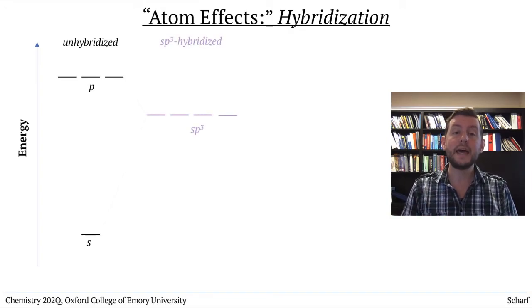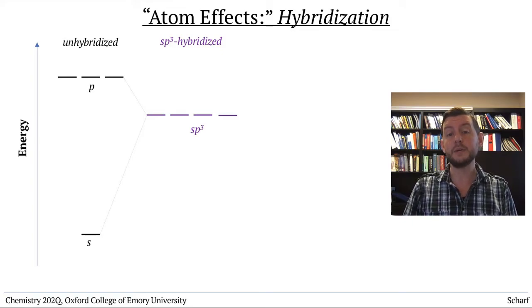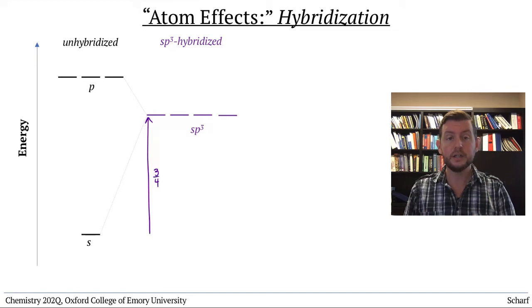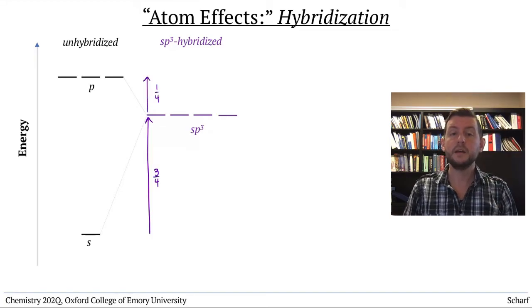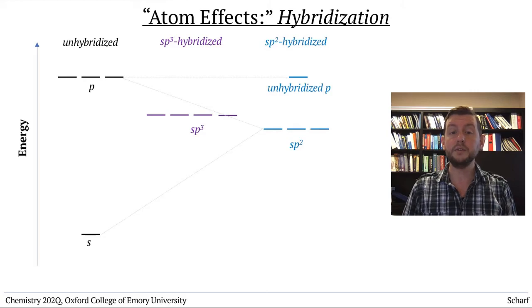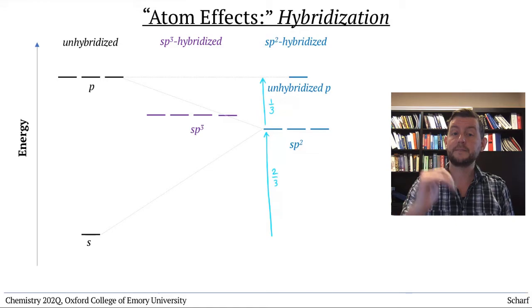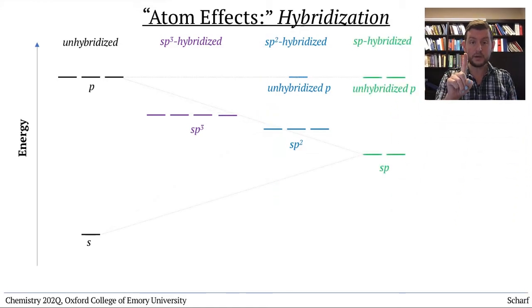When an atom's S and all three P orbitals hybridize, the resulting four SP3 hybrid orbitals are at an energy three-fourths of the way from the S orbital energy to the P orbital energy. But when an atom hybridizes its S orbital with just two of its P orbitals in SP2 hybridization, the three resulting SP2 orbitals are two-thirds of the way from the S orbital to the P orbital energy. And when an atom hybridizes its S orbital with just one P orbital in SP hybridization, the resulting SP hybrid orbitals are halfway between the energy of the S and P orbitals.